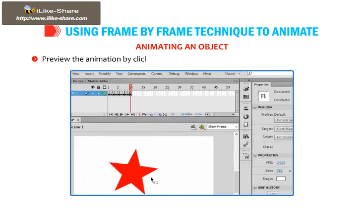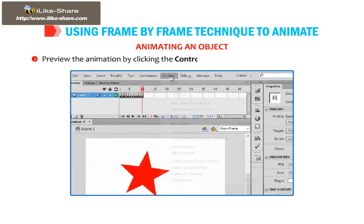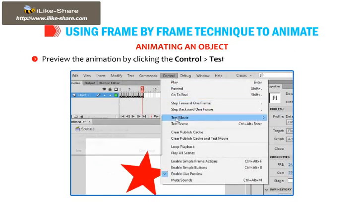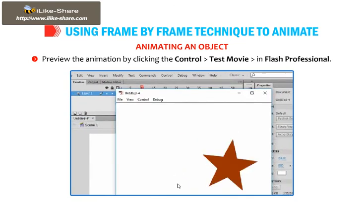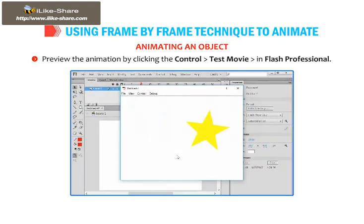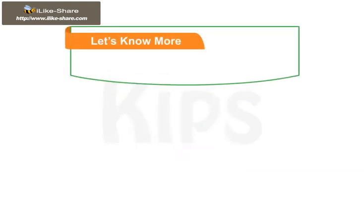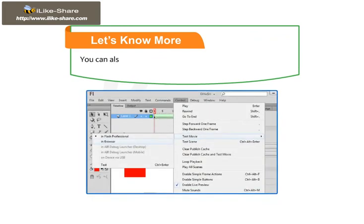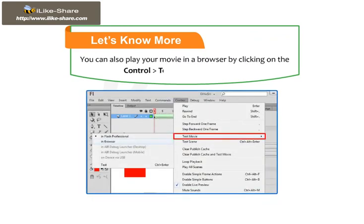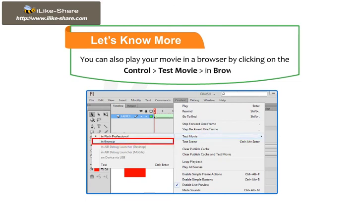Preview the animation by clicking Control, then go to Test Movie, then go to In Flash Professional. You can also play your movie in a browser by clicking Control, then go to Test Movie, then go to In Browser.